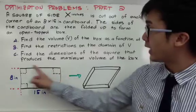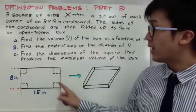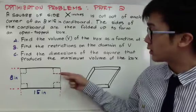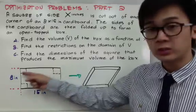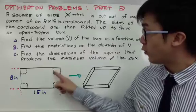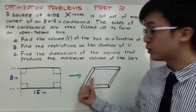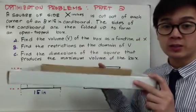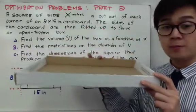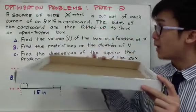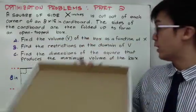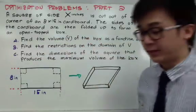This is your 8 by 15 inch cardboard. From this flat cardboard, you're going to cut out the corners to create an open top box. If you fold this up, you'll be able to construct an open top box similar to the one drawn here.